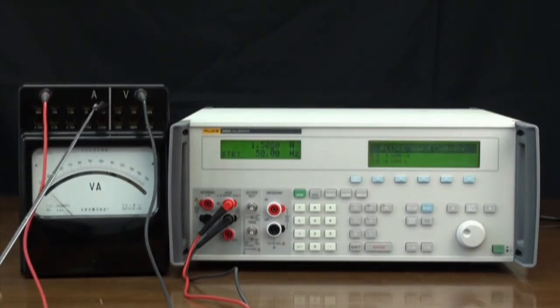The steps for calibrating a voltage function are similar, except that you need to switch the connecting wires to normal terminals. The switches on the analog meter also need to be switched to the corresponding sockets for voltage.